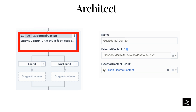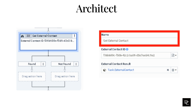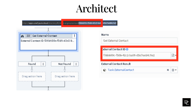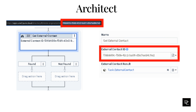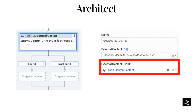For the Get External Contact action, after adding it from the toolbox, the developer types a name for the action — the label you enter here becomes the action's name displayed in the task sequence. Enter a literal value or expression in the External Contact ID field; Architect creates a variable for use with the External Contact result field. You can find the External Contact ID by going to External Contacts in the Admin panel and copying the 32 alphanumeric ID and pasting it in the External Contact ID field. Type a name for the variable to store the External Contact found in this action — you can reference this variable in the rest of the flow.